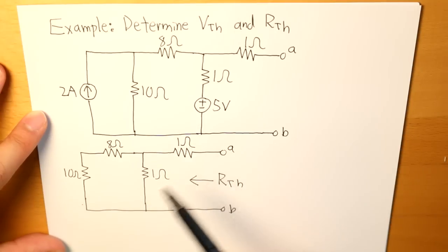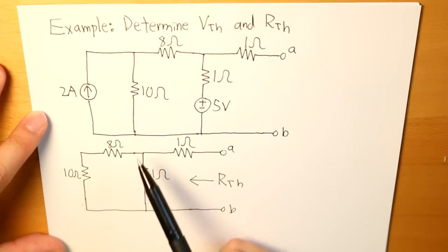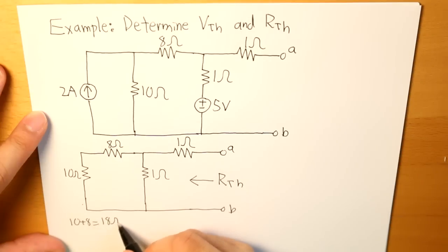Now we want to put them together. So first what we're going to do is take 10 and 8 together, and since these are in series, what we get is 10 plus 8, and we get 18 ohms.